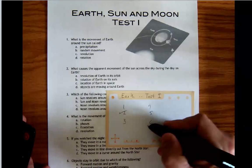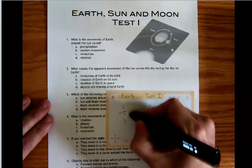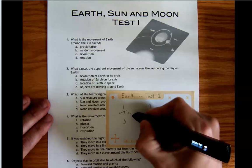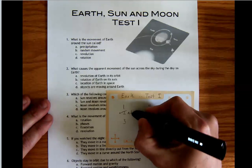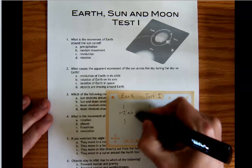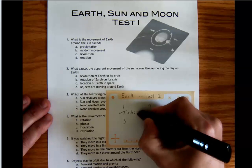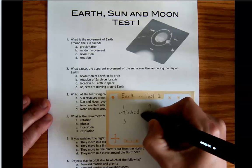Number two, what causes the apparent movement of the Sun across the sky during the day on Earth? Is it A, revolution of Earth in its orbit? B, rotation of Earth on its axis? C, location of Earth in space? Or D, objects are moving around Earth?